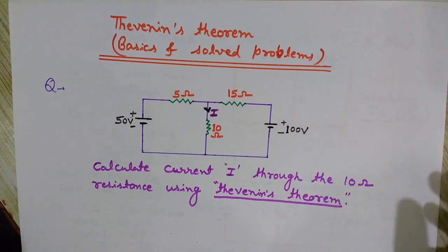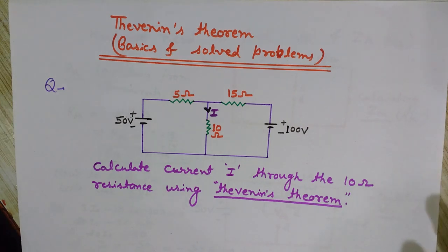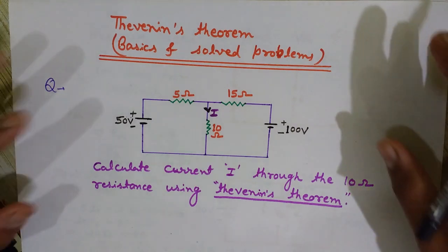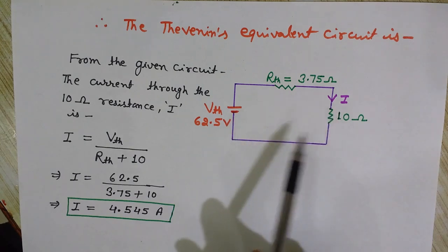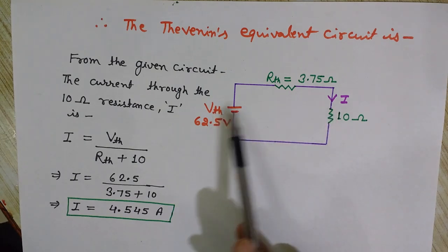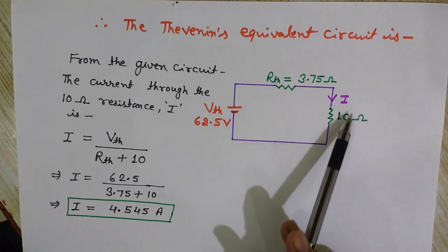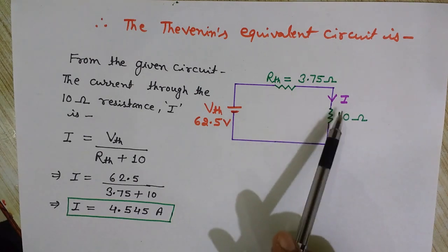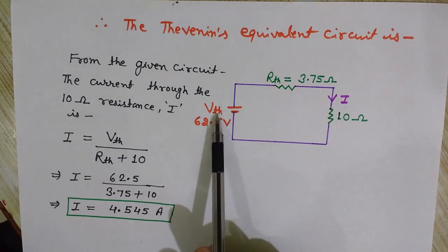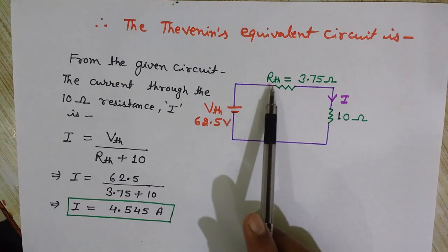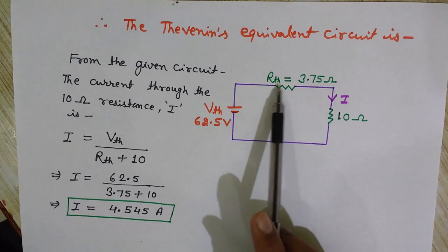With respect to any terminal pair, Thevenin's theorem states that we can replace a very complex electrical network by a simple series circuit having a voltage source and a resistance. Any complex circuit can be replaced by this kind of simple series circuit. This voltage source is known as the Thevenin's voltage VTH, and R is known as the Thevenin's resistance RTH.